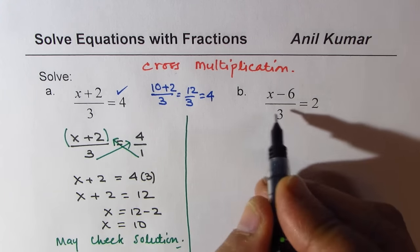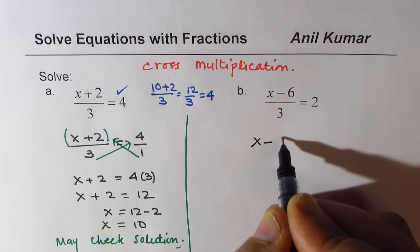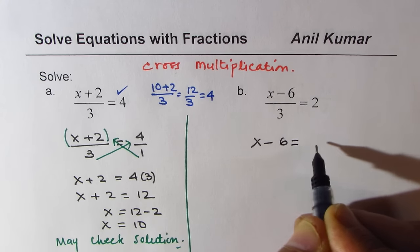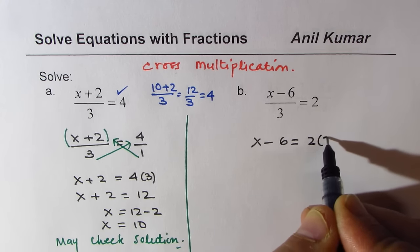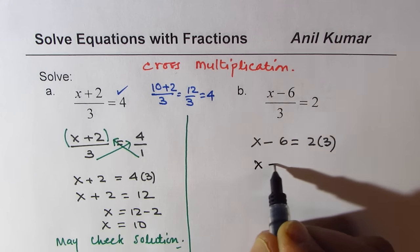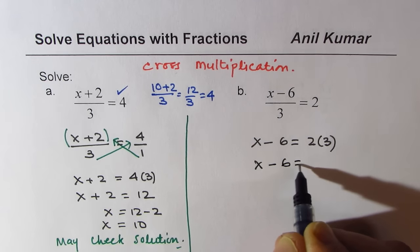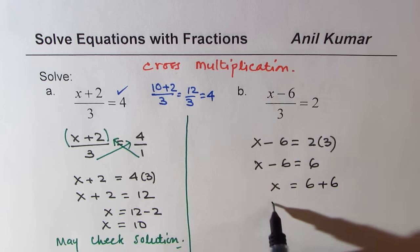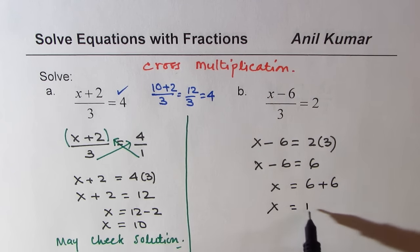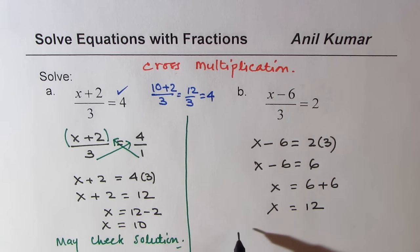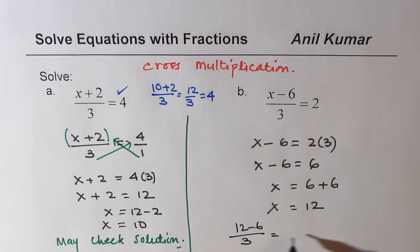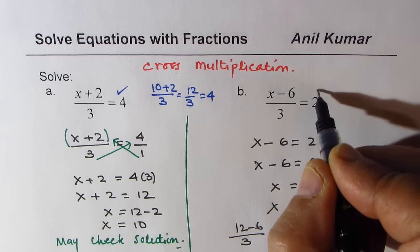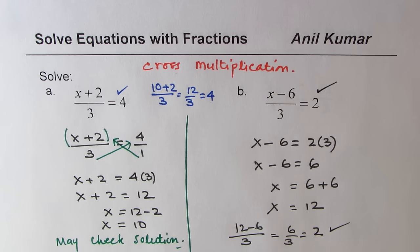Let's apply the same technique again. We get x - 6 = 2 times 3, so x - 6 = 6, meaning x = 6 + 6, so x = 12. You can check: (12 - 6) / 3 = 6 / 3 = 2, which is indeed what we expected.